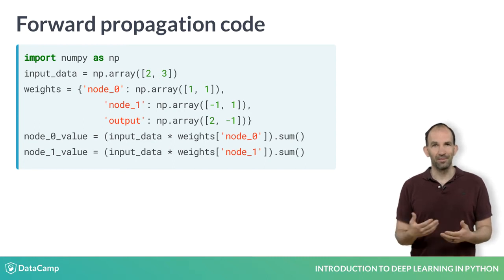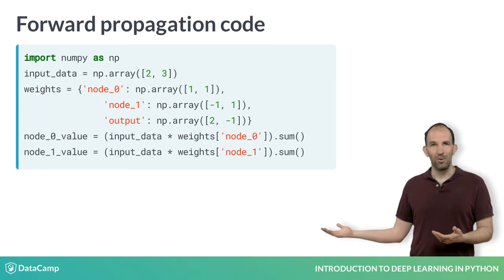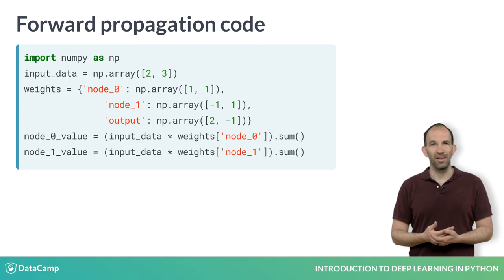Let's start forward propagating. We fill in the top hidden node here, which is called node 0. We multiply the inputs by that weight for that node and then sum both of those terms together. Notice that we have two weights for node 0. That matches the two items in the array it is multiplied by, which is the input data. These get converted to a single number by the sum function at the end of the line.